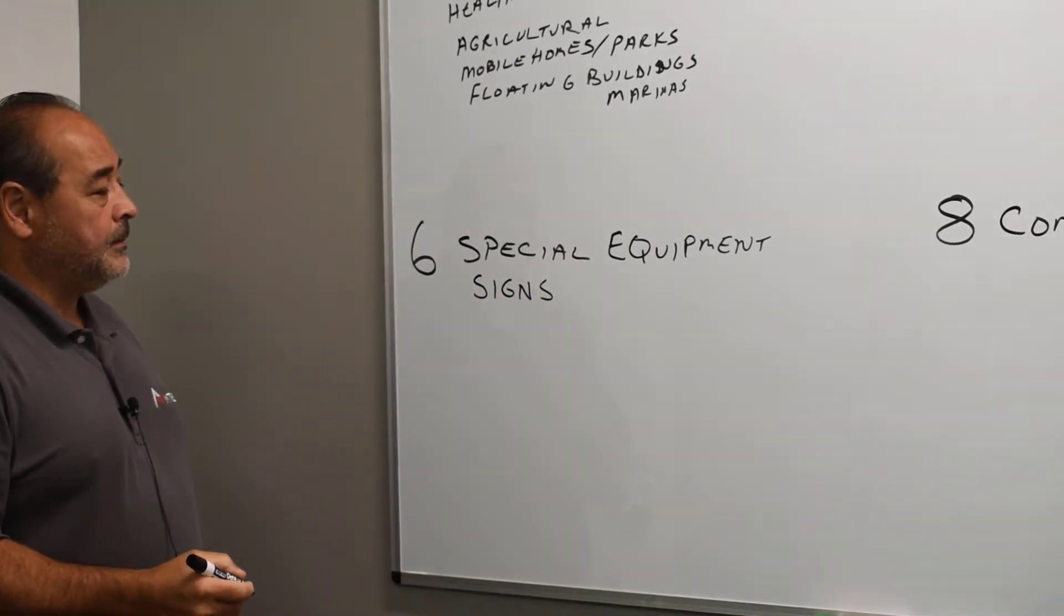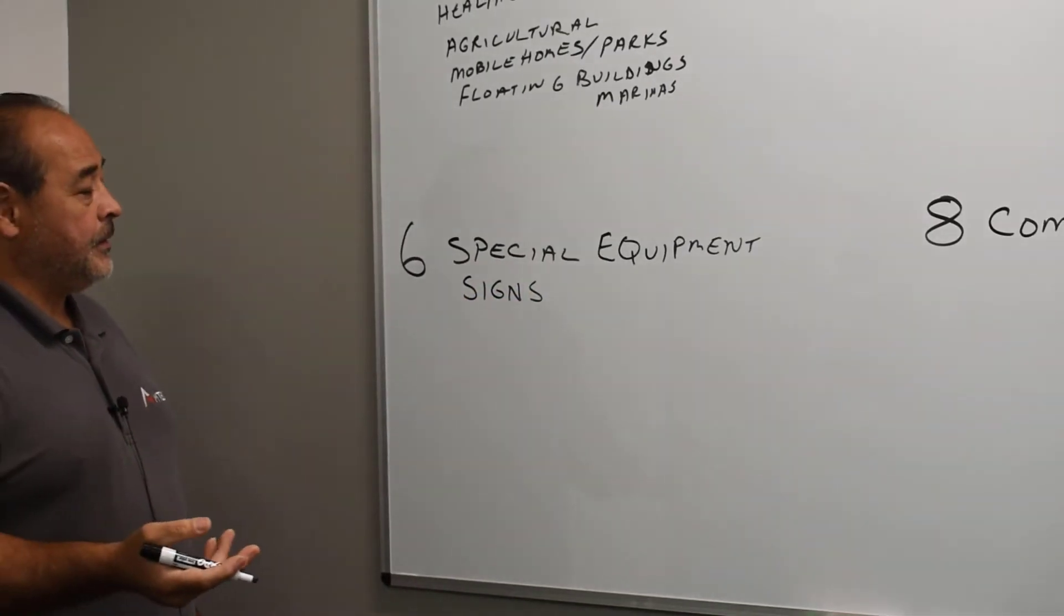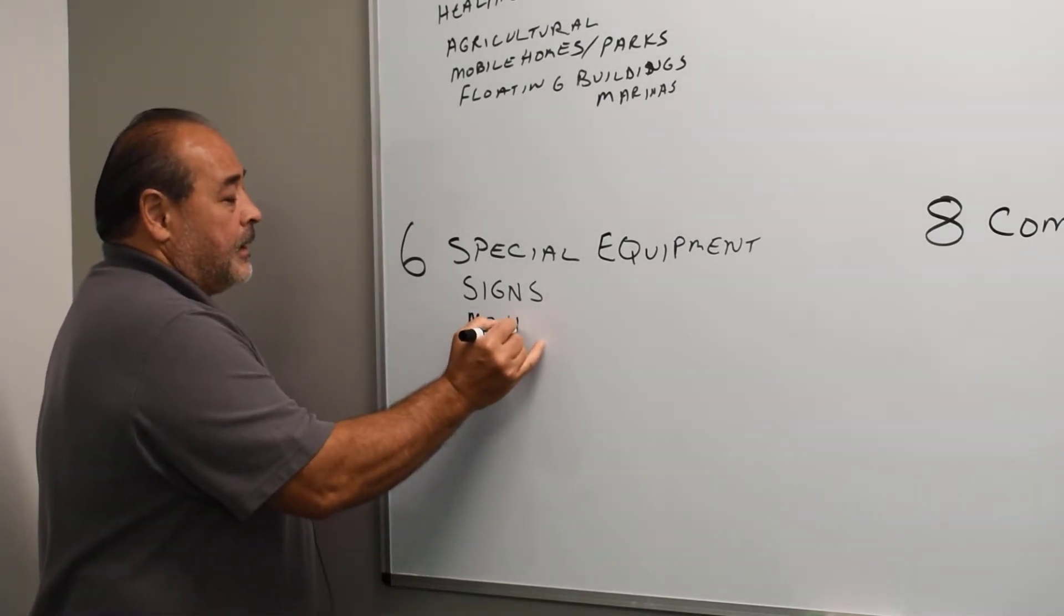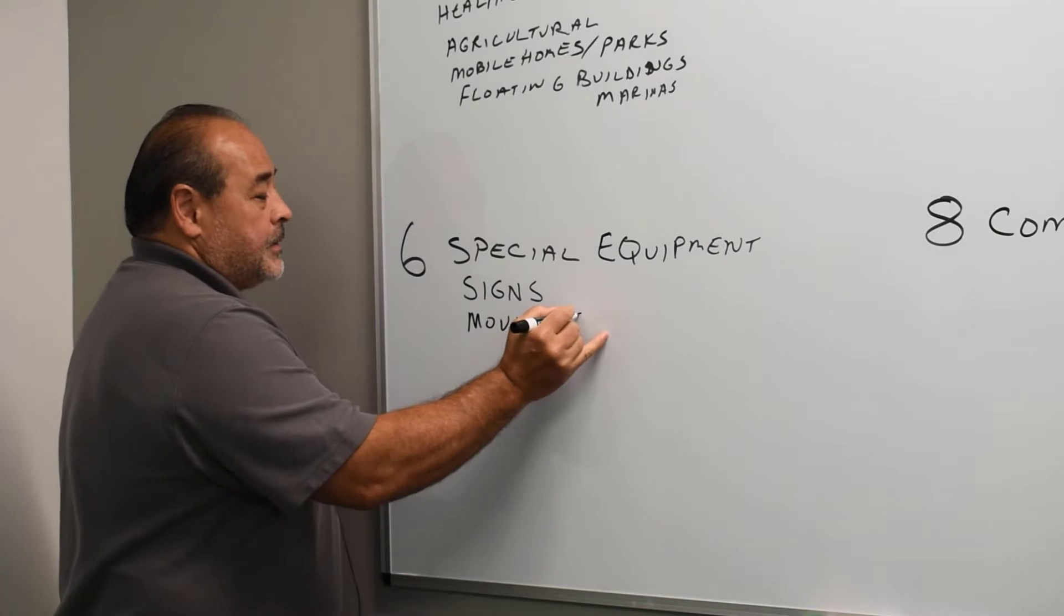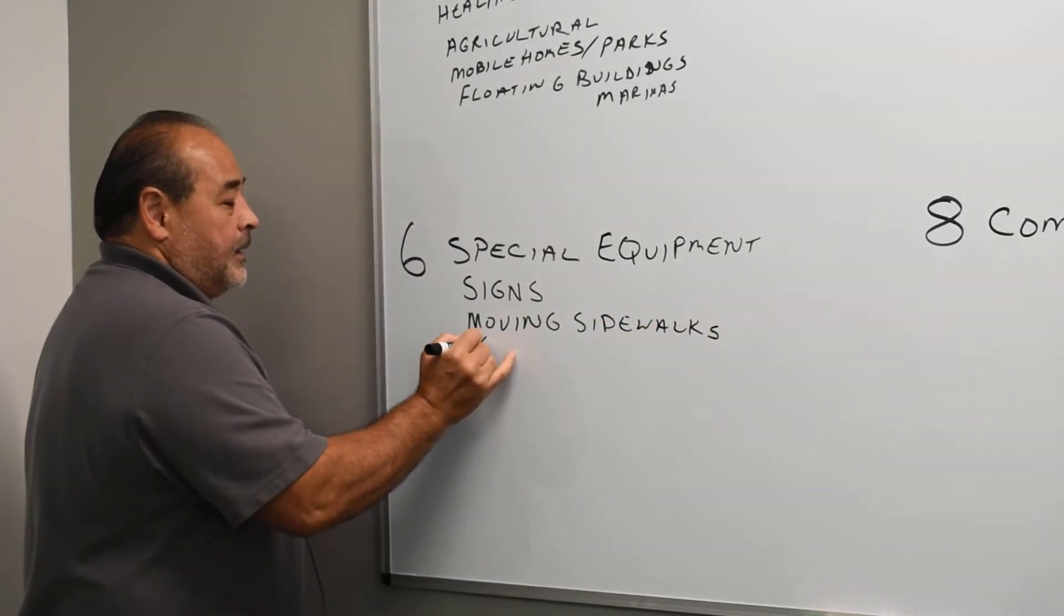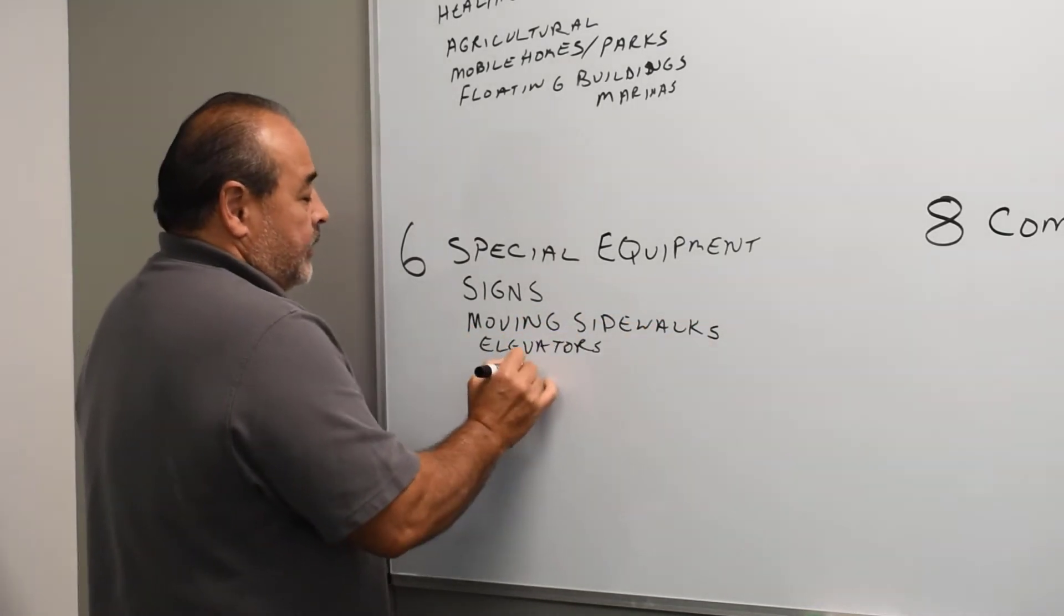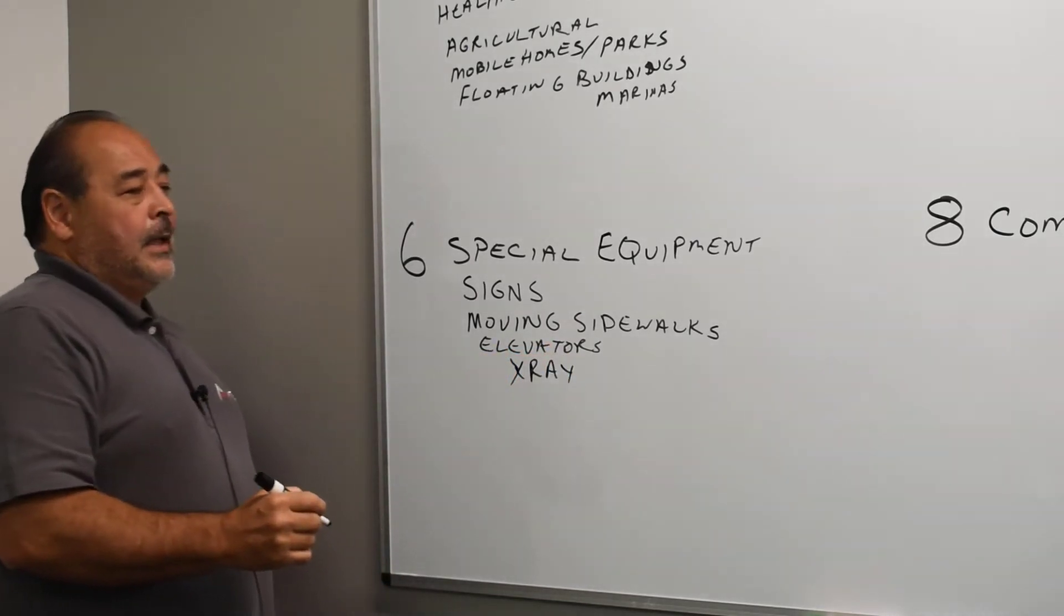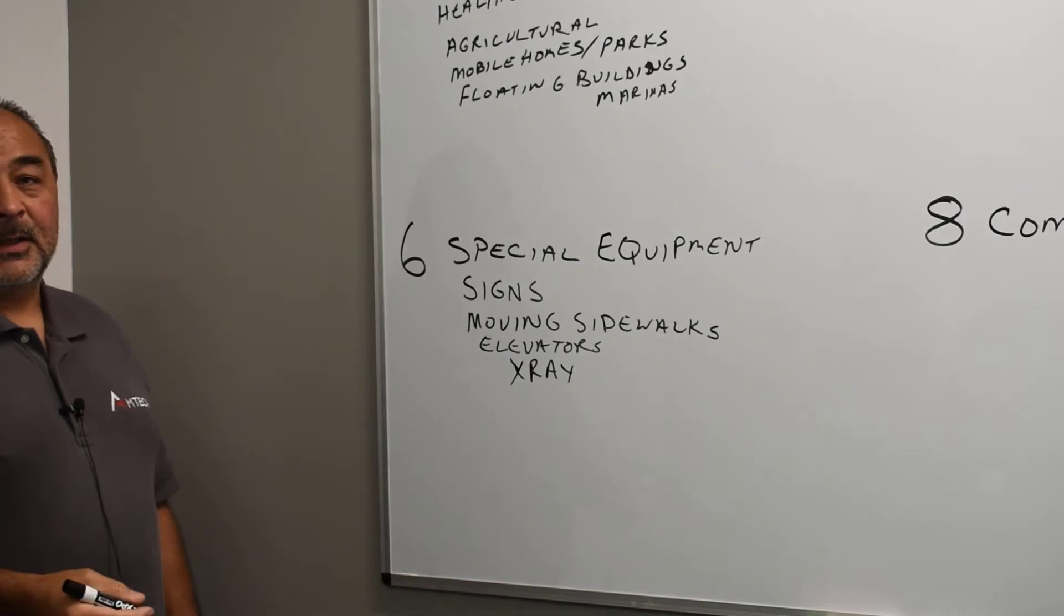Some of the heaviest hit items in chapter six is signs. Signs, not your normal piece of equipment. And there's other weird stuff in there like moving sidewalks, we'll put those in like in the airports, elevators, x-ray equipment. Anything that's weird, not normal, and it's a piece of equipment, it's probably going to be in chapter six.